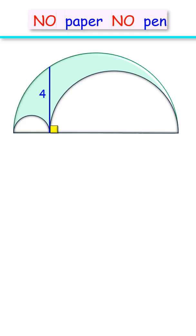We have three semicircles with the length of this blue line segment being four centimeters. The exciting part is that with this limited data, without using any paper and pen, we have to find the area of this green shaded region.